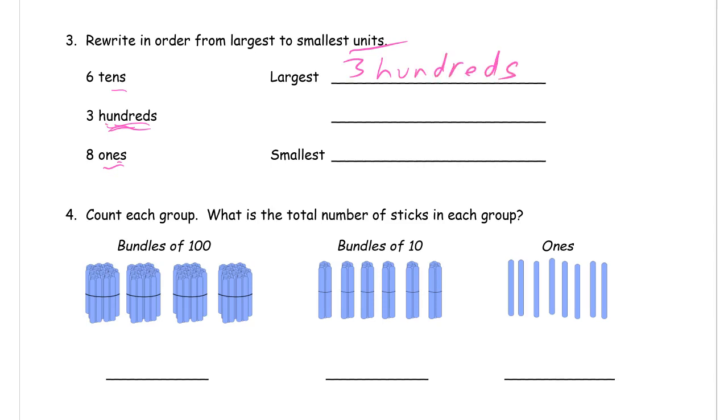Get used to spelling these properly because you're going to be needing to write them a lot. So it really is going to be helpful for you to start practicing them and paying attention to how to spell the word hundred. Because you're going to have to write it and it's better to have it spelled right. So 3 hundreds, 6 tens, and 8 ones.